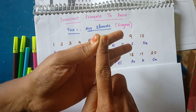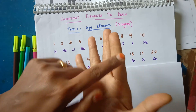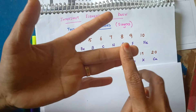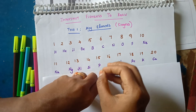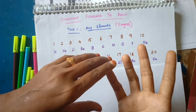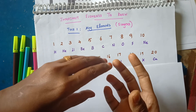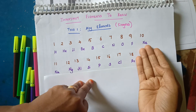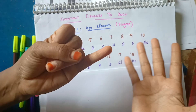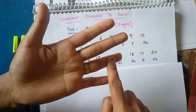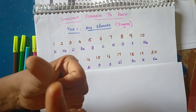Hydrogen, Helium, Lithium, Beryllium, Boron, Carbon, Nitrogen, Oxygen, Fluorine, Neon — 10 elements, 10 atomic numbers. Next 11 to 20: Sodium, Magnesium, Aluminium, Silicon, Phosphorus, Sulfur, Chlorine, Argon, Potassium, Calcium. So, Chlorine atomic number is 17. Calcium atomic number is 20.